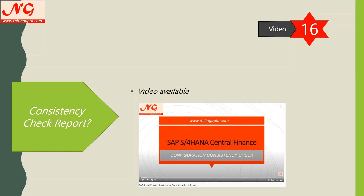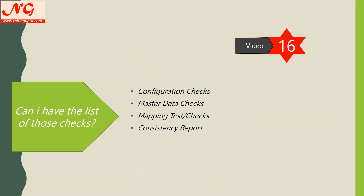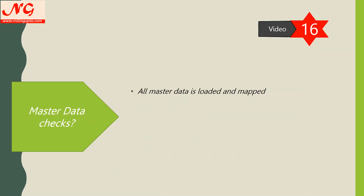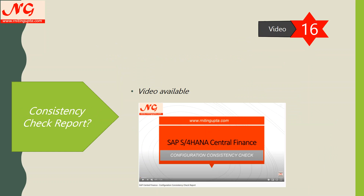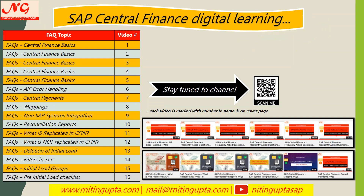So these are the key checks — let me repeat them once again: configuration checks, master data checks, mapping checks (a random mapping test), and the consistency report. These are the key tests, and this covers the summary for the CFIN module digital series.